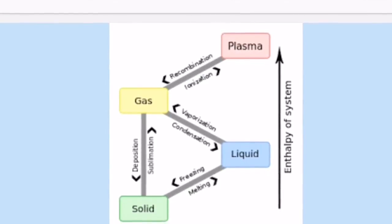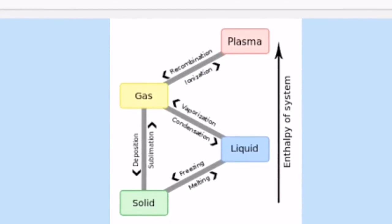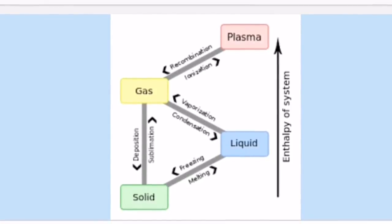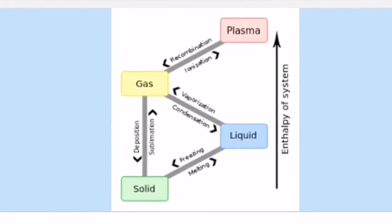Evaporation of an element or compound is a phase transition from the liquid phase to vapor. There are two types of vaporization: evaporation and boiling.